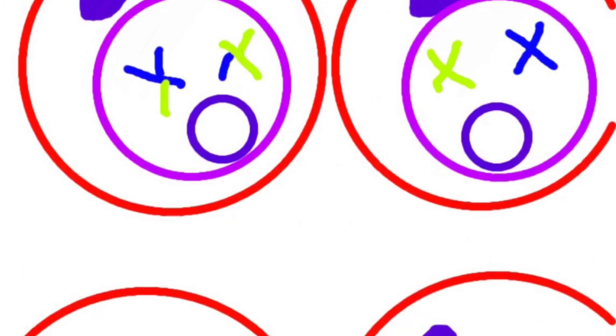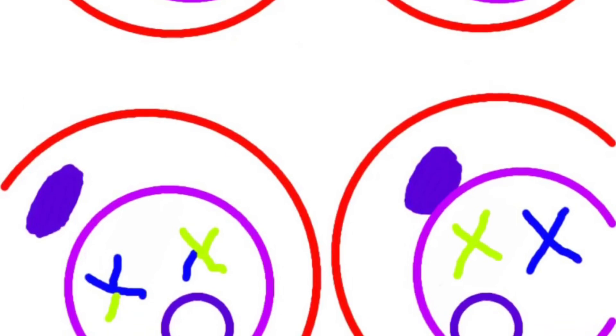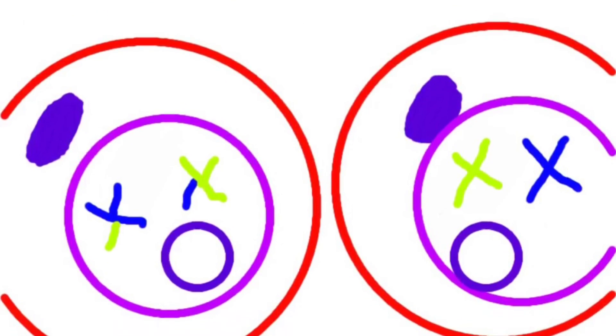Telophase II has been completed. There are now four daughter cells, and they each have half the number of chromosomes of the parent cell.